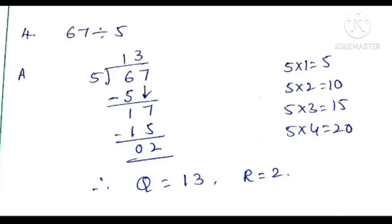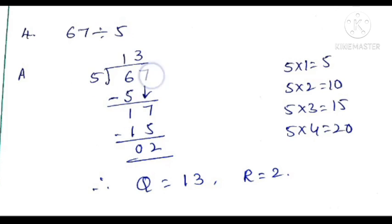Fourth question: 67 divided by 5. Reset the table of 5. Here what is the first digit? 6. See the table: 5 ones are 5, 5 twos are 10. Compared to 6, 10 is bigger. So we take 5 ones are 5. This 1 we write above the line, and this 5 we write below the 6. Subtract: 6 minus 5 is 1. Then drop the 7 down — it becomes 17.